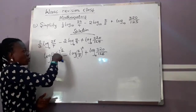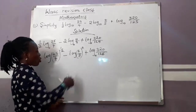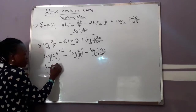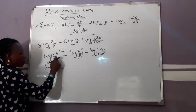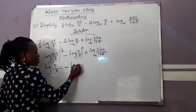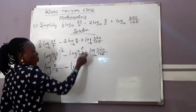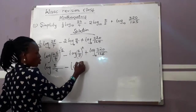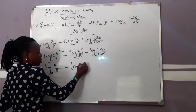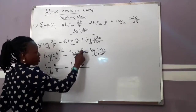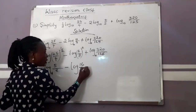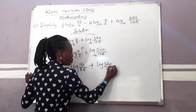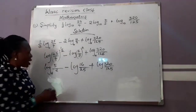We're going to find the square root of 25 over 4, which gives 5 over 2. Then for the subtraction term, 4 over 5 squared: 4 squared is 16, and 5 squared is 25, giving 16 over 25. Plus log 320 over 125. Now applying the laws of logarithms — addition corresponds to multiplication and subtraction corresponds to division.